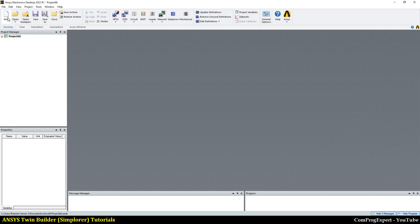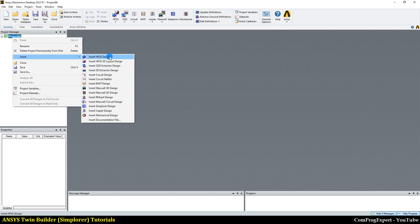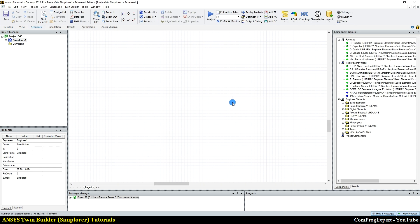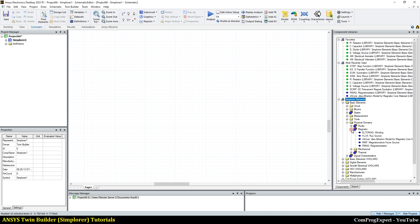Let's generate a new project and insert a new Simplorer design. From here, basic elements, physical domains, magnetic.